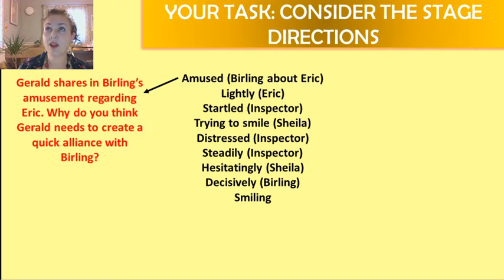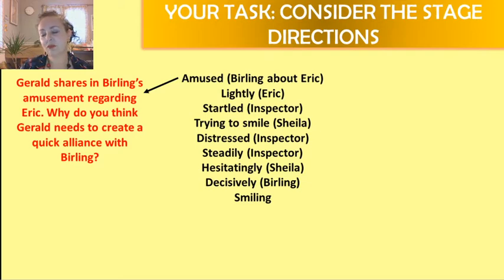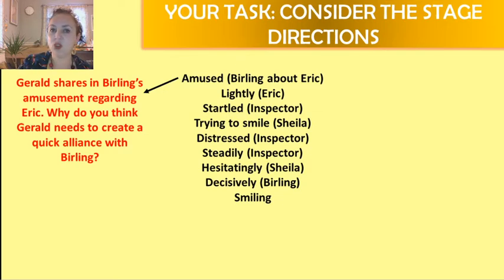Gerald and Mr. Birling are chatting about Eric, and they're having a bit of a laugh — giggling, sniggering, perhaps not being particularly kind. They're laughing at Eric. Why might Gerald want to be sycophantic like that with Mr. Birling? Think about who Gerald is about to know. Think about Crofts Limited and Birling and Company, those two businesses. Why is it in Gerald's interest to get Mr. Birling on side? You know the answer.